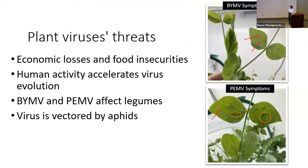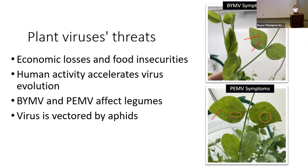Plant viruses cause huge economic losses and food insecurity. As humans have been changing the landscape, we've rapidly evolved our surroundings, and viruses have answered in response by rapidly evolving as well. Two viruses of interest are Bean Yellow Mosaic Virus and Pea Necrotic Mosaic Virus — BYMV and PMV. They show very similar symptoms: yellow mosaic dots, and PMV additionally shows dark necrotic areas.